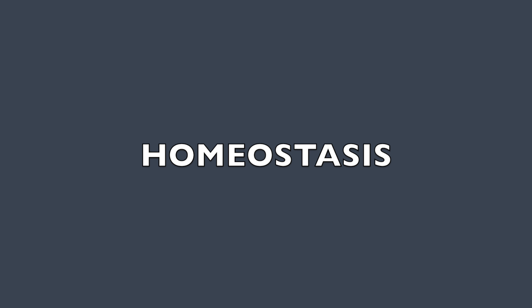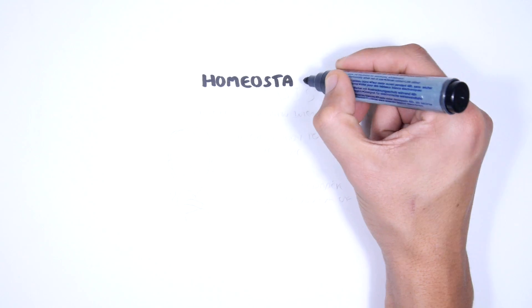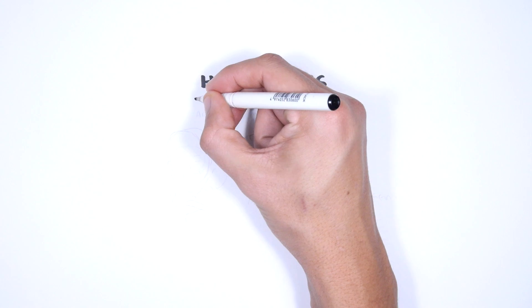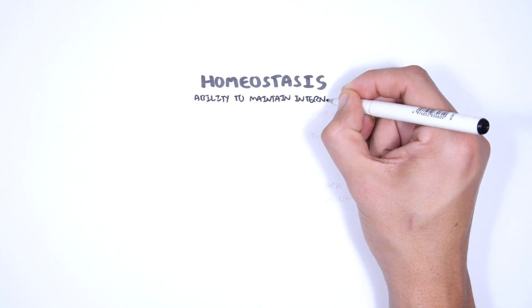In this video we're going to talk about homeostasis, this is an overview. Although the environment around an organism changes, the organism maintains relatively stable internal conditions. This ability to maintain internal stability is called homeostasis.